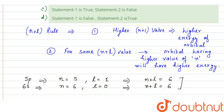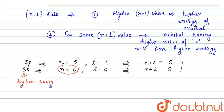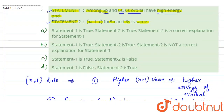Now you can see the value of n plus l is same for both. But if you see the value of n, the value of n is greater for 6s. So it has higher energy than 5p, because in 5p the value of n is equal to 5, which is lower than 6. So from the statements, in the first statement it is given that 6s orbital has high energy — this is true.